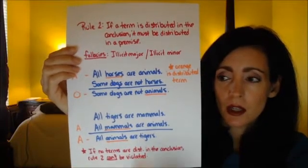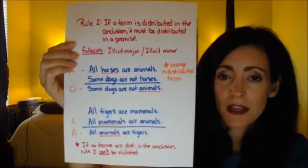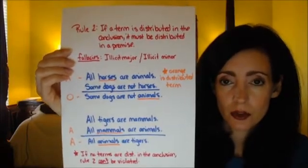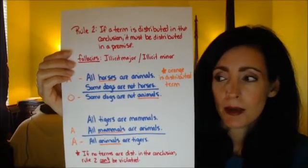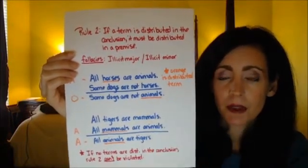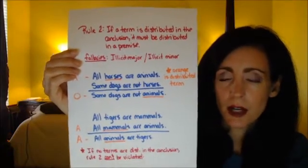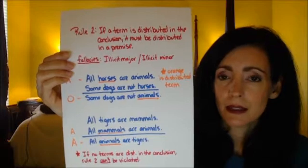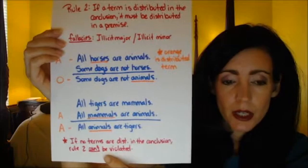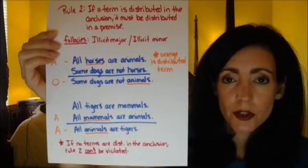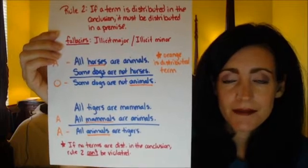So to clarify: illicit major means the predicate should have been distributed; illicit minor means the subject should have been distributed. Make sure you don't mix those up, because students often do. Also important to note: if no terms are distributed in the conclusion, then rule two cannot be violated.